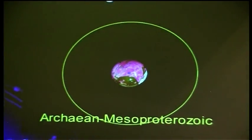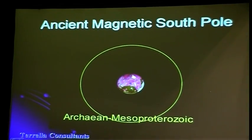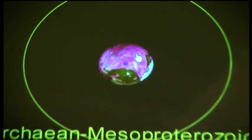This is the ancient South Pole, and what you can see on the screen is Africa — orientated sideways. This is South America tucked in. The Atlantic Ocean will eventually open up at that join. This is India, Madagascar and Antarctica, and remnants of Europe up here.